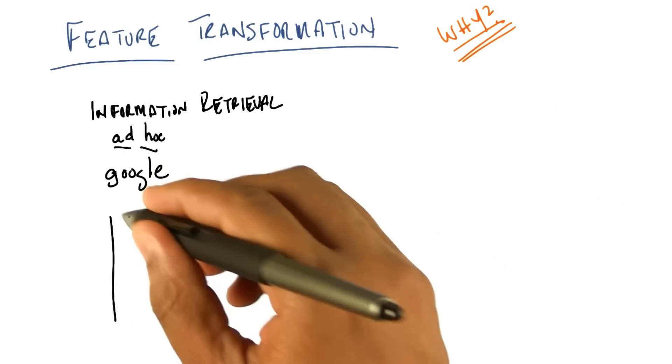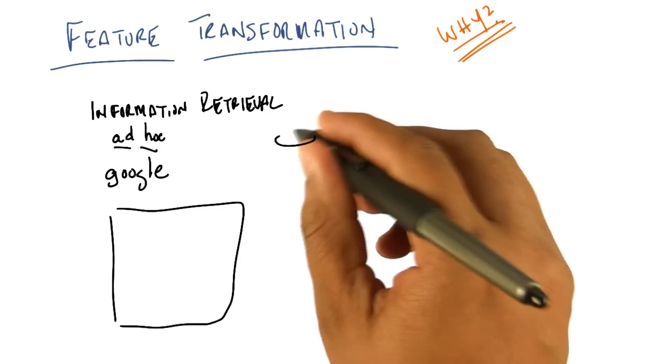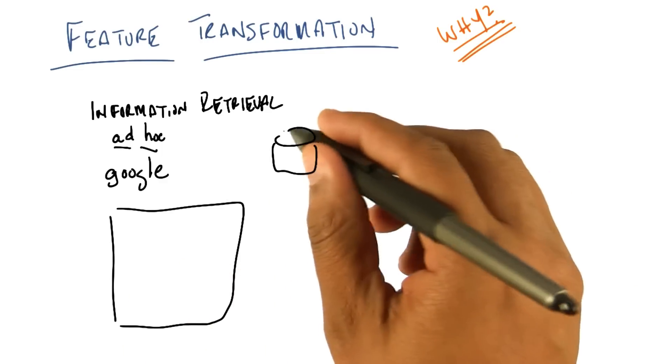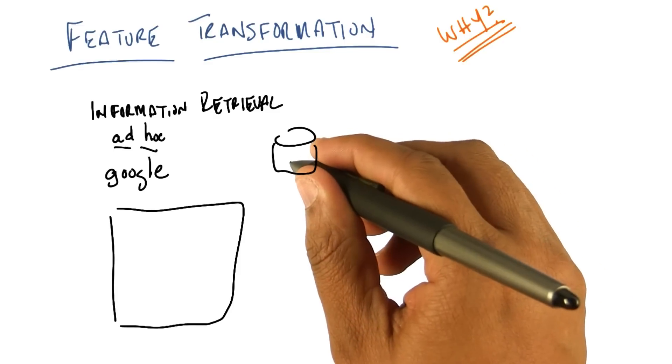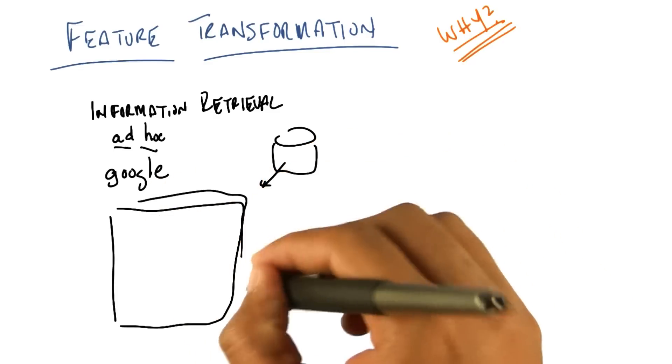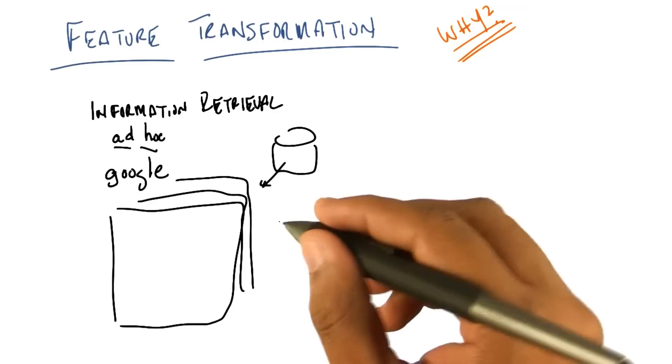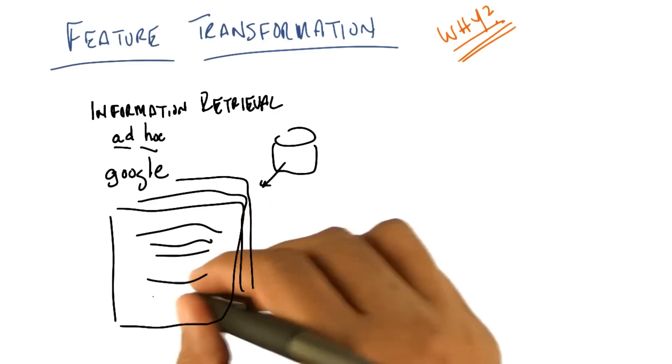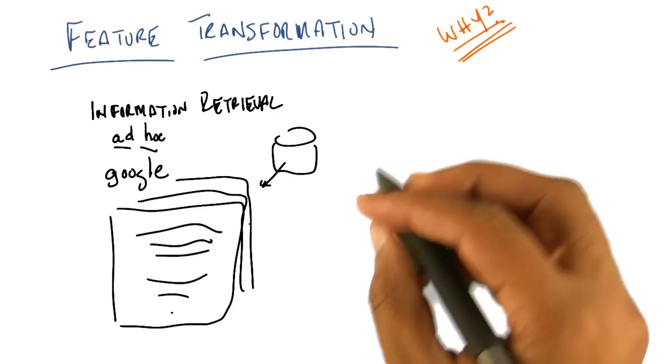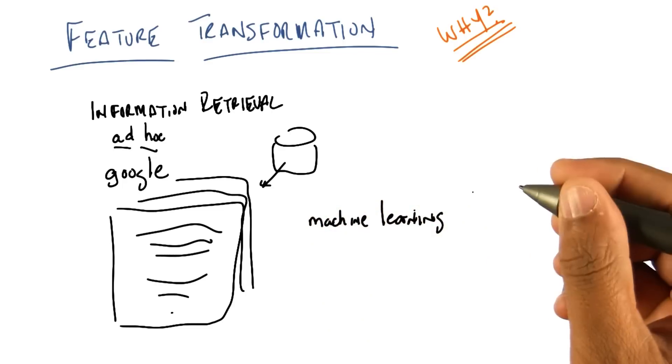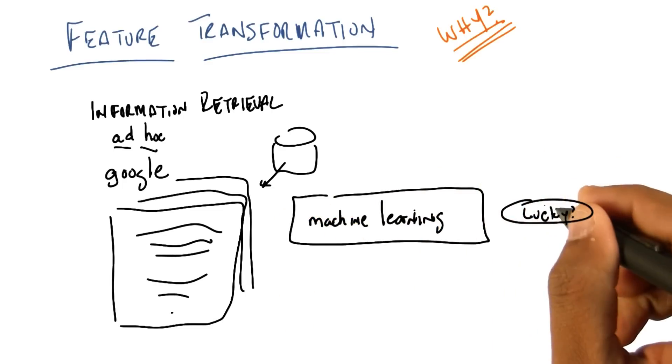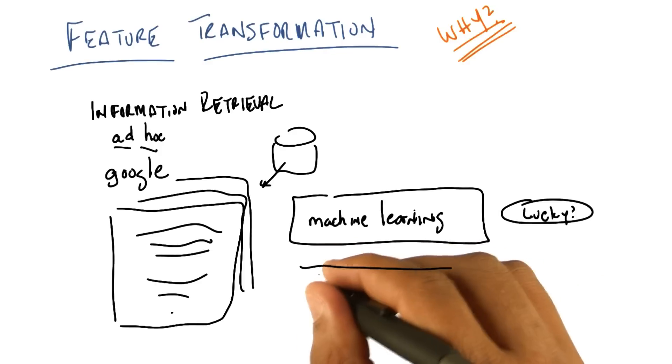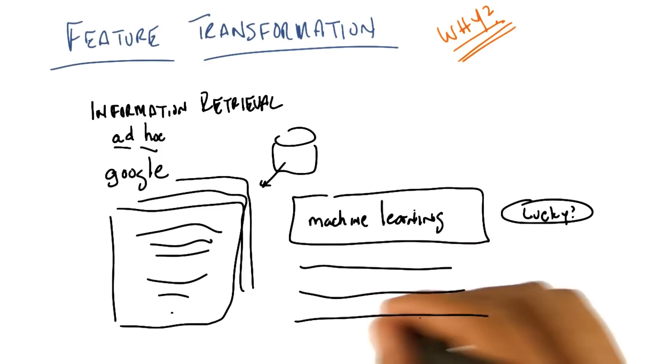Which is, you have a whole bunch of documents in some database somewhere. This is me drawing a database. And you want to retrieve exactly the subset of documents that are relevant to some query. So this is me drawing documents. So I might type in a word like machine learning into some text box somewhere, click on some button and then get back a list of relevant documents, nicely sorted against the white background.